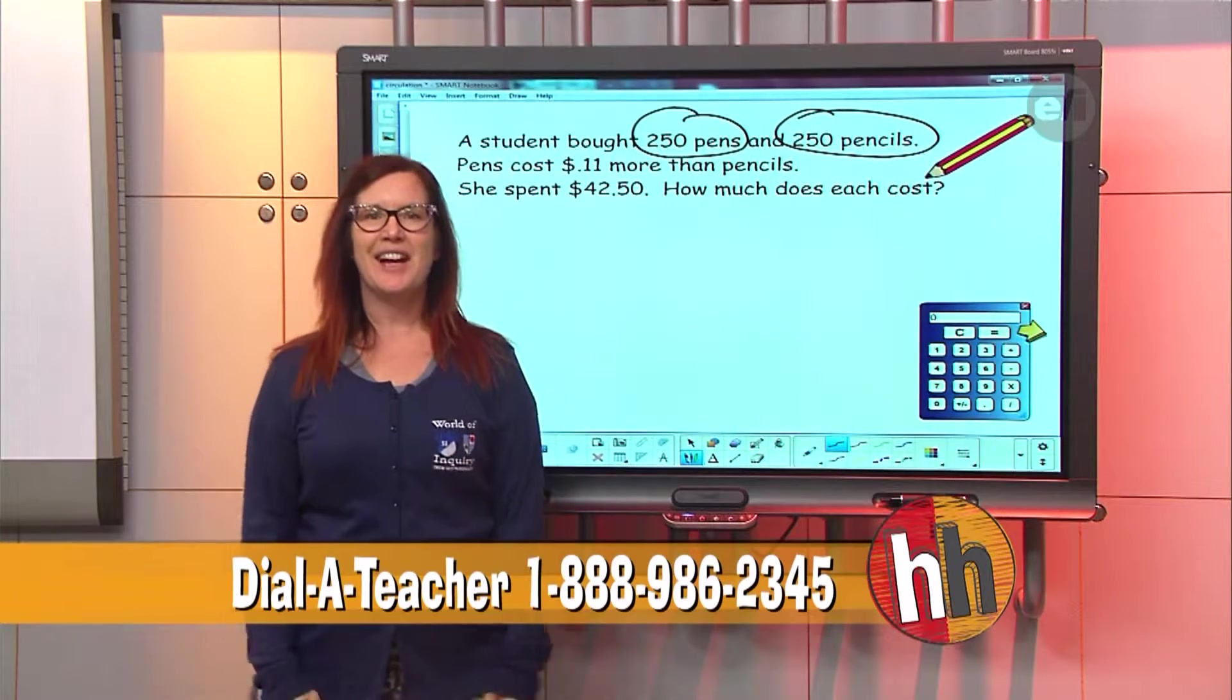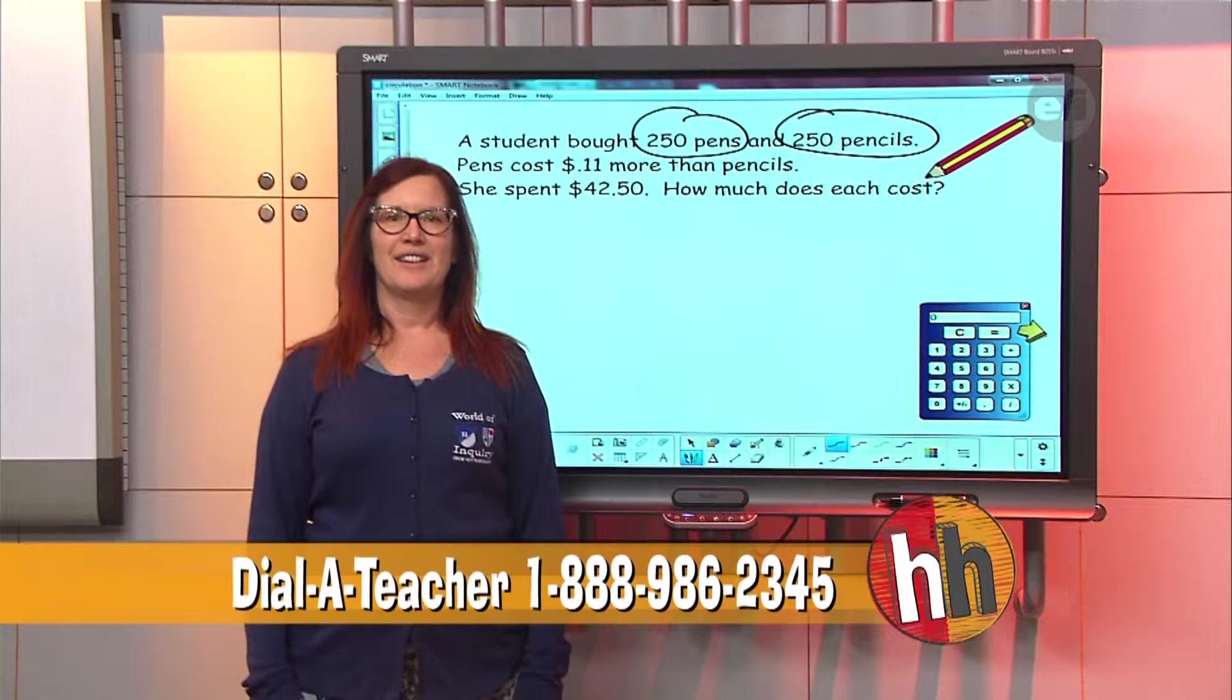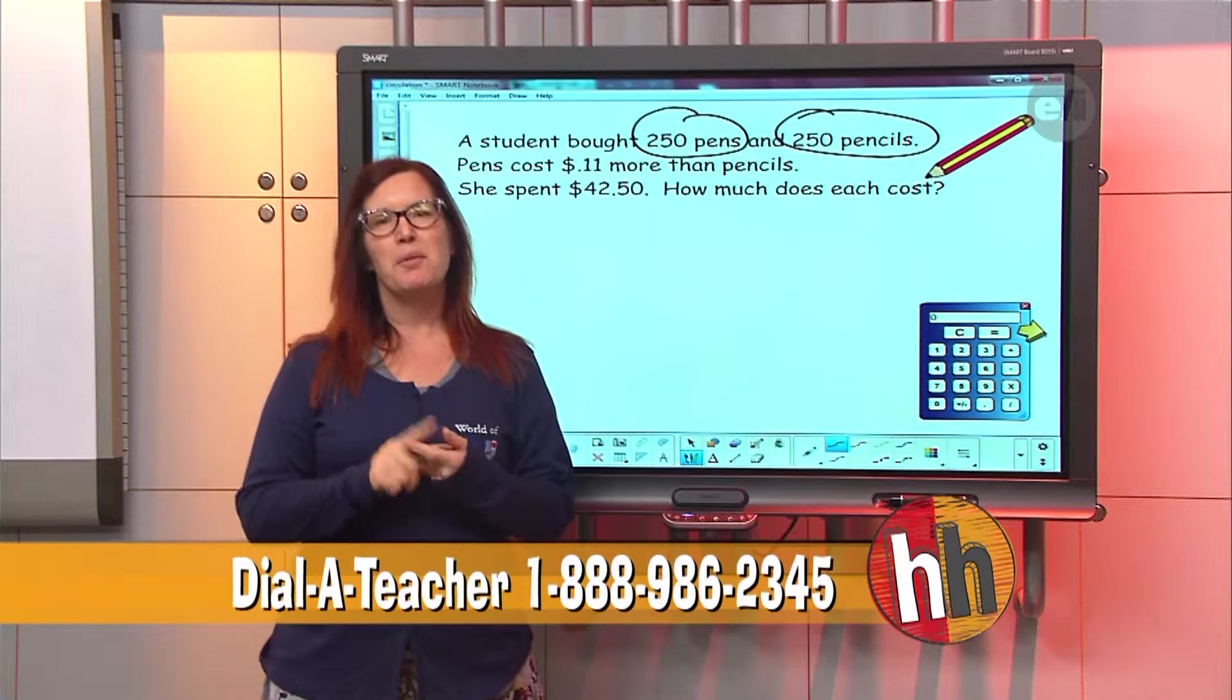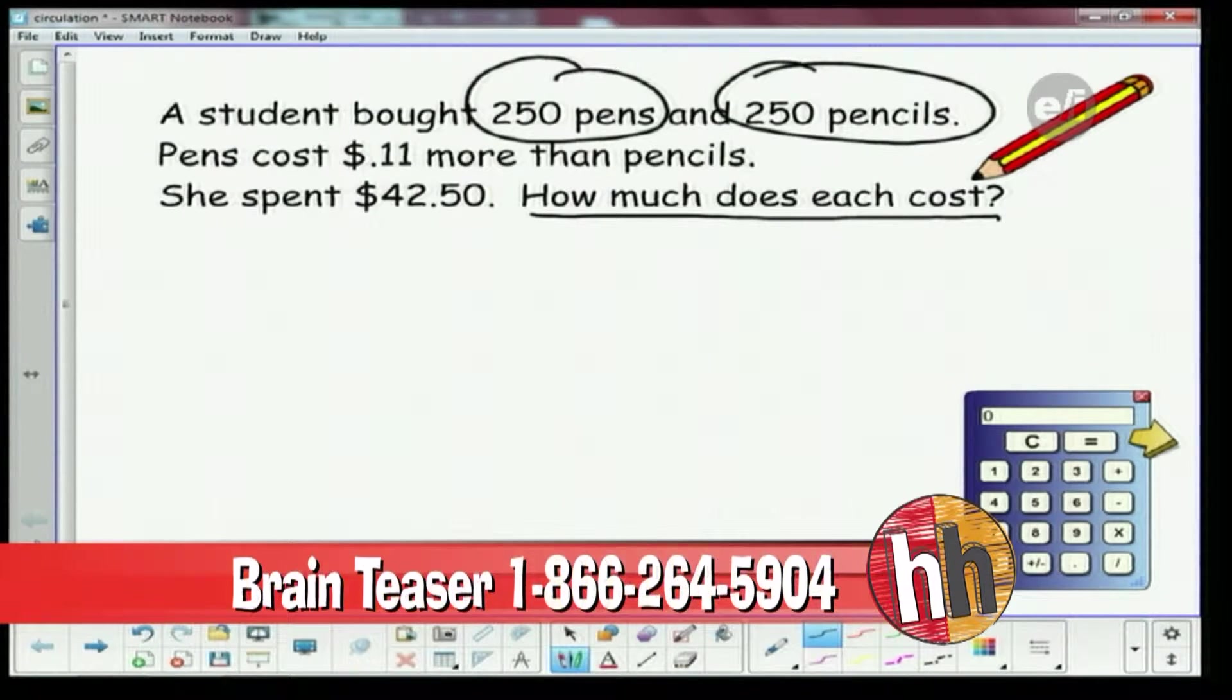Well, I know how many pens and pencils she bought - 250 pens and 250 pencils. I guess we're done, right? No, we're not done. Think about it. We're trying to find not how many pens and pencils she bought, but it's really important to know what you're looking for when you start the problem. We are looking for how much does each one cost - how much the pens cost and how much the pencils cost.